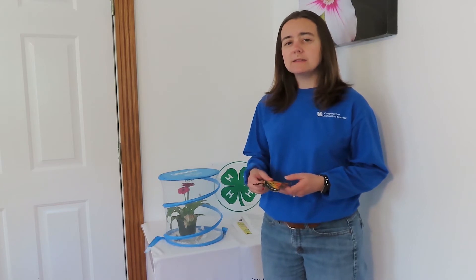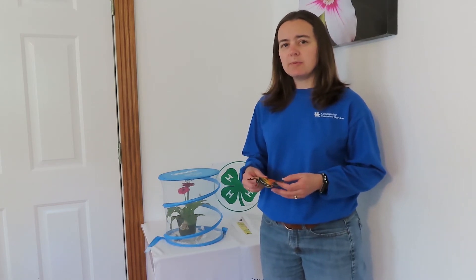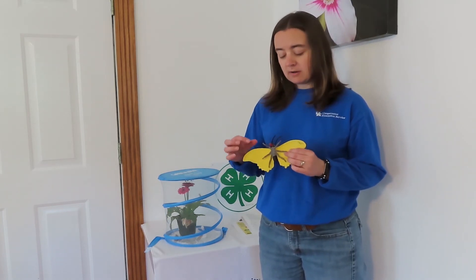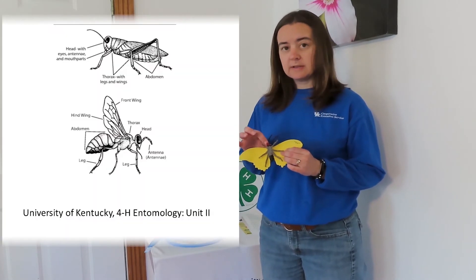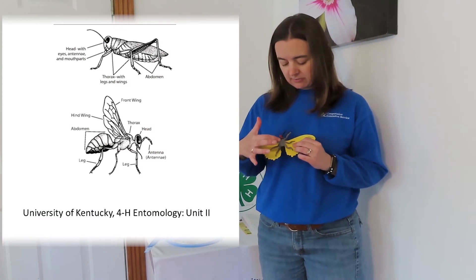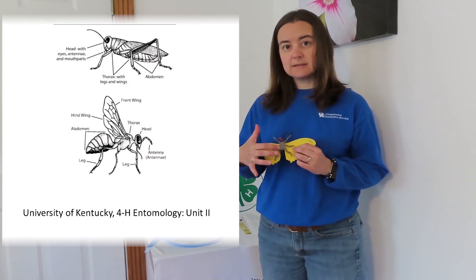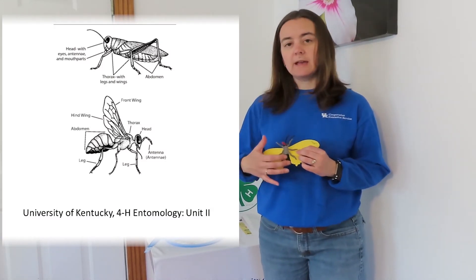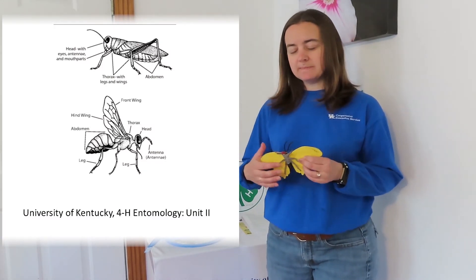Let's talk just a little bit about insects and butterflies in general. All insects have three body parts. You can see on our model here there's the head, the thorax which the legs are attached to, and the abdomen.